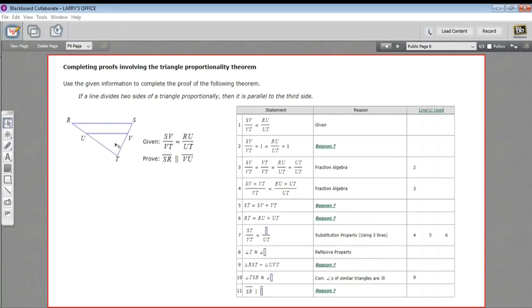In this problem, we are dealing with a pretty complicated proof involving the triangle proportionality theorem. And what the triangle proportionality theorem says is that if you have the same relationship between these two sides and these two sides,